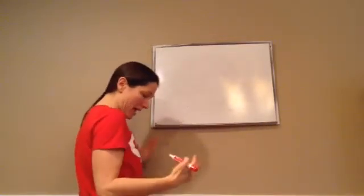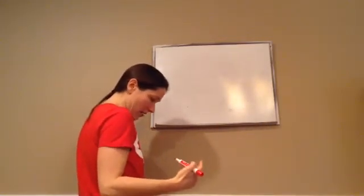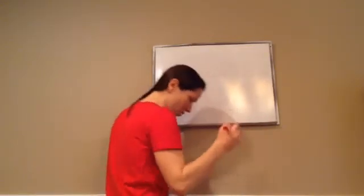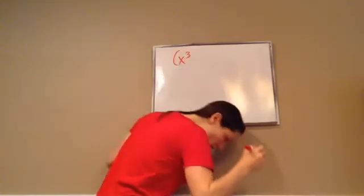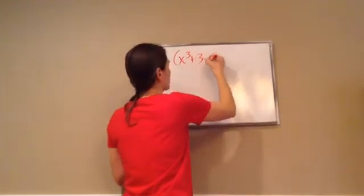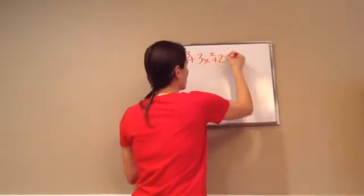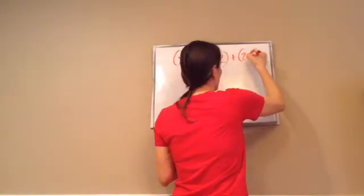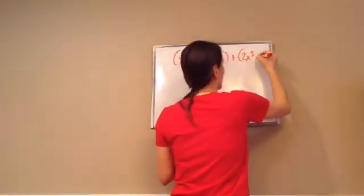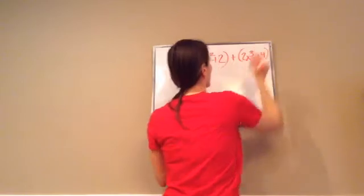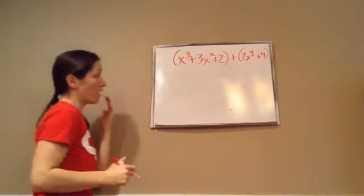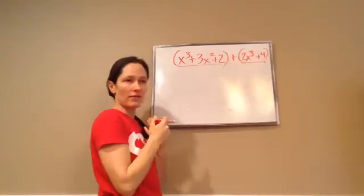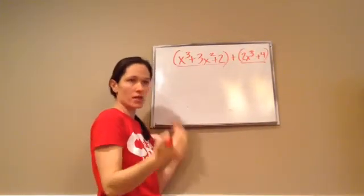For example, here's what it says: add this and write the answer in descending order. I'll explain what I mean by that. Here's the problem: x cubed plus 3x squared plus 2 plus 2x cubed plus 4. Because this is an adding problem, you're adding this plus this, you don't even have to have the parentheses in there. It's not a big deal.